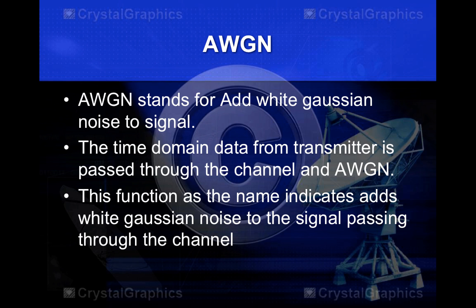AWGN is the second phase of the block diagram — the channel phase. It stands for Add White Gaussian Noise to signal. It is a function used in MATLAB to add white Gaussian noise to the signal. The time-domain data from the transmitter is passed through the channel and the AWGN function adds white Gaussian noise to the signal passing through the channel.